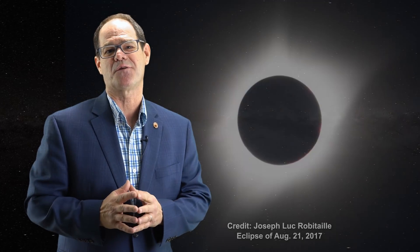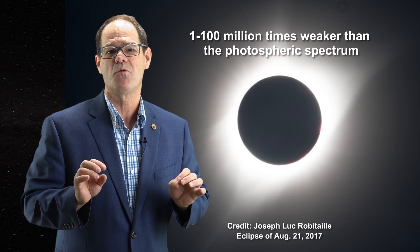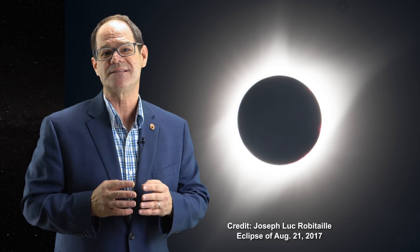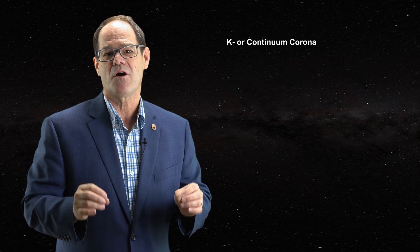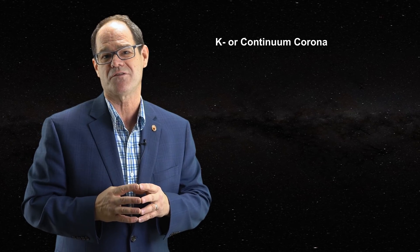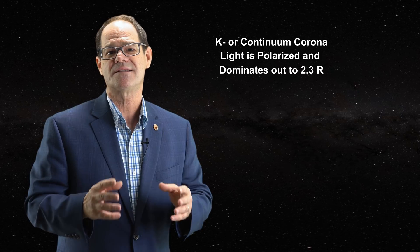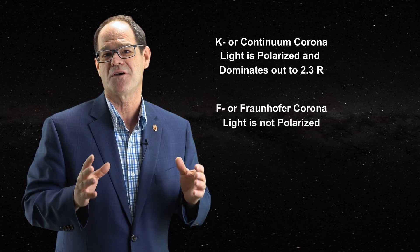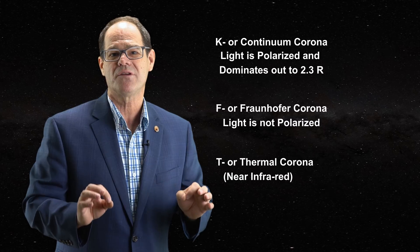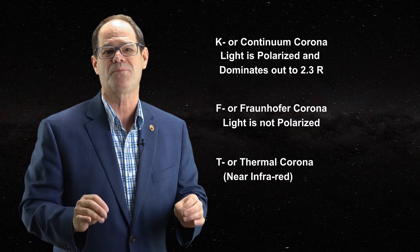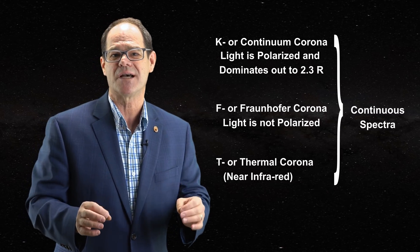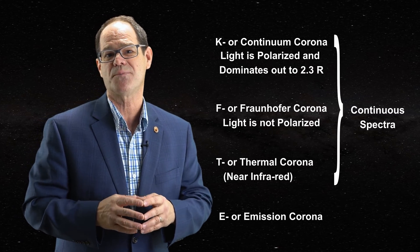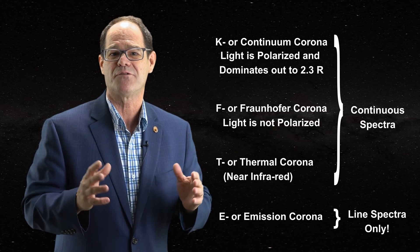Next, let's discuss the corona, which also has a continuous blackbody spectrum. This spectrum is 1 to 100 million times weaker in intensity than that from the photosphere. The corona is easily observed during an eclipse and is divided into three parts: first, the inner K or continuum corona, dominant out to about 2.3 solar radii; second, the F or Fraunhofer corona, which usually has an oval shape; and then the outermost T or thermal corona. Each component differs depending on the type of spectrum found. The atmosphere of the sun is also characterized by an E or emission corona, corresponding to coronal emission lines from varying elements at different elevations.